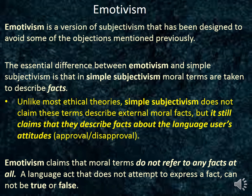A language act that does not attempt to express a fact cannot be either true or false, unlike claims in simple subjectivism. In simple subjectivism it is, for example, either true or false that Falwell approves of homosexuality — this is a propositional claim about the world. Emotivism, however, claims that moral terms actually do not refer to any facts at all, not even facts about what one approves or disapproves of. Note, however, that this is still not moral skepticism, because emotivists do claim that moral speech acts are meaningful, even if they are not factual.